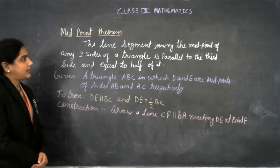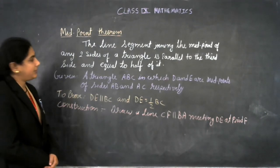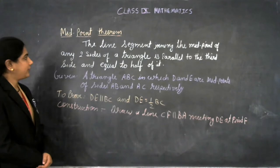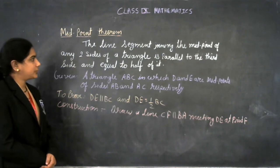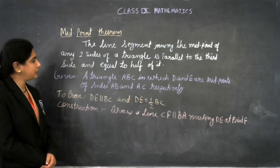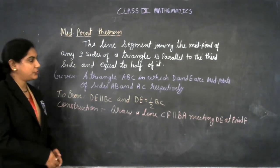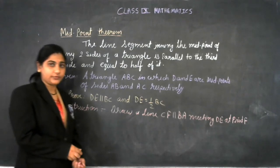The statement is: the line segment joining the midpoints of any two sides of a triangle is parallel to the third side and equal to half of it.